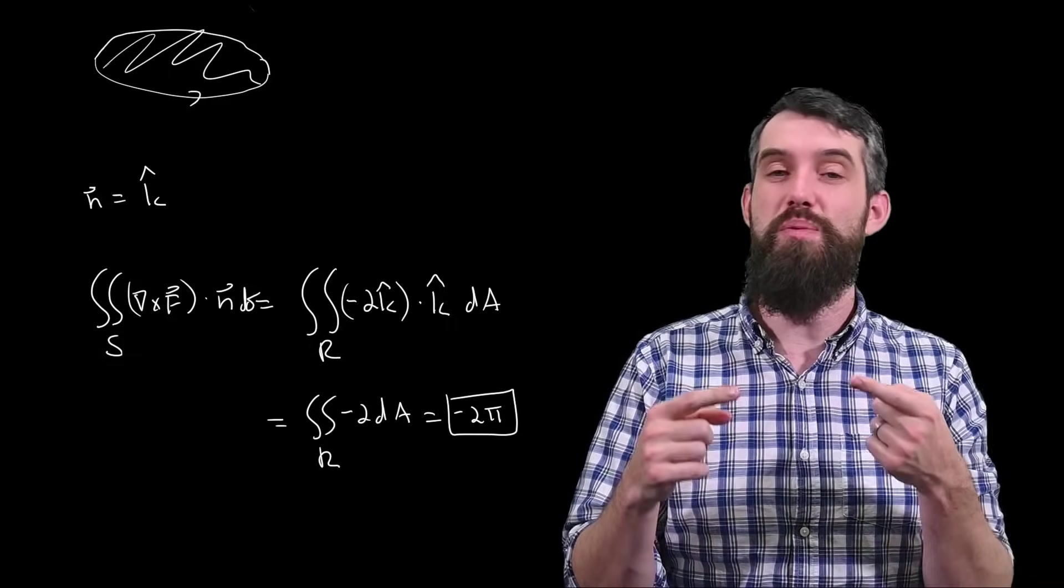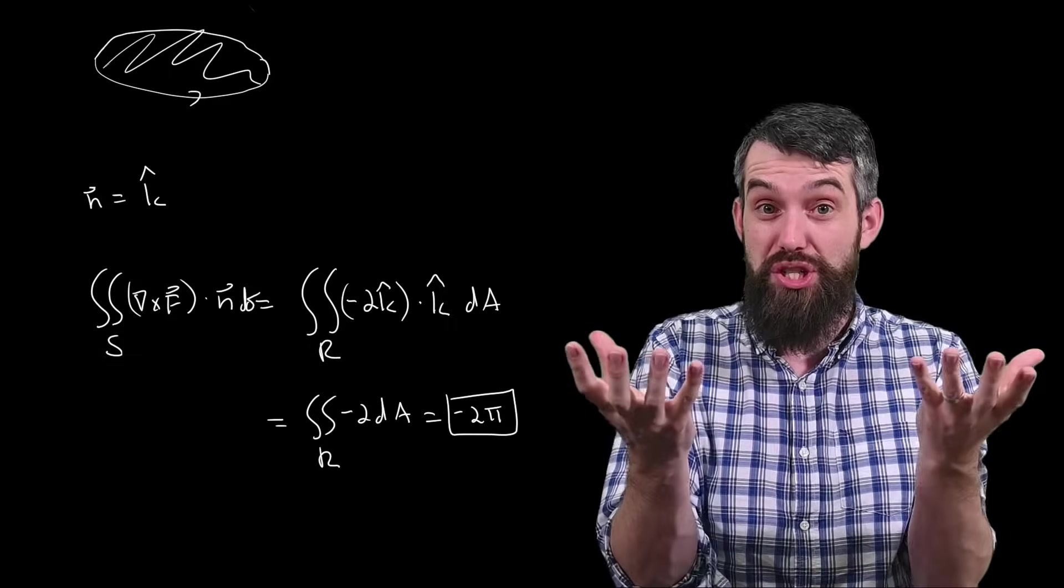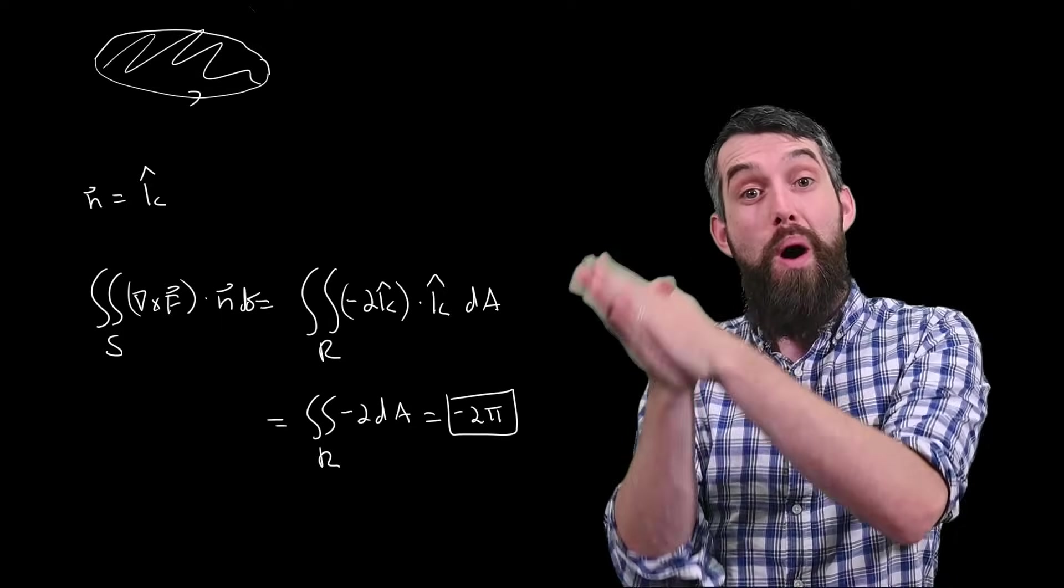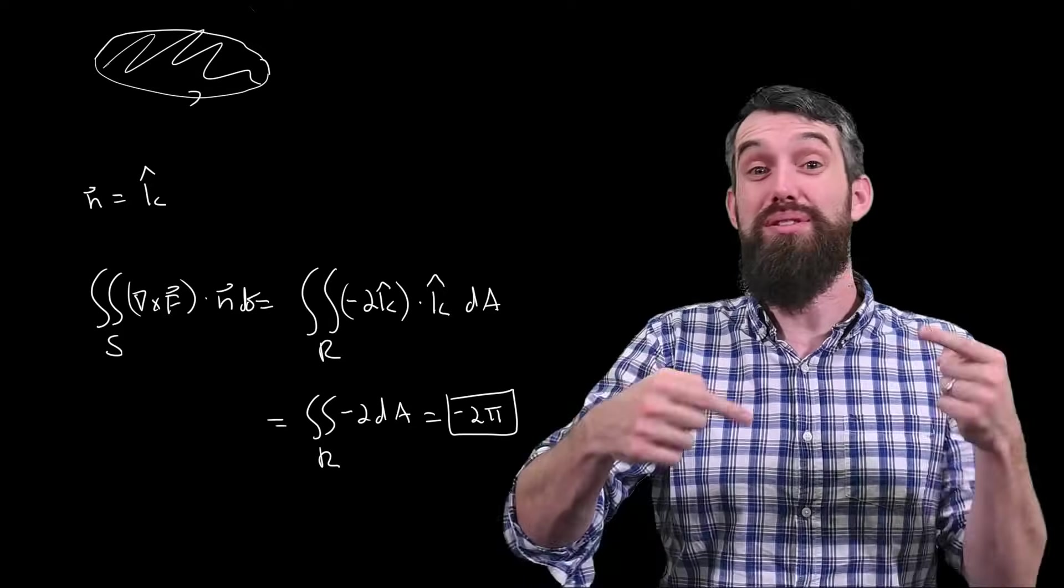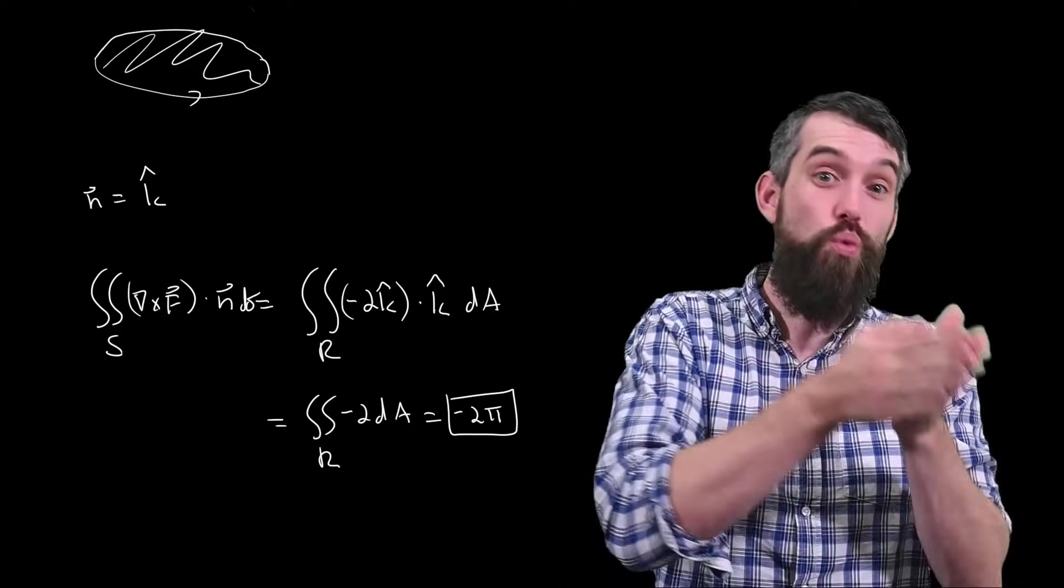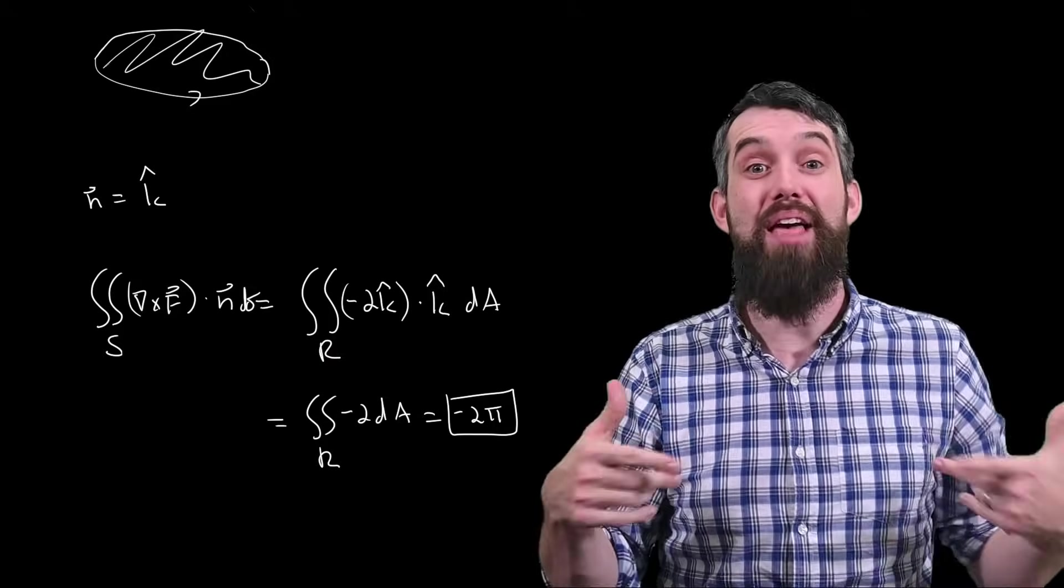So previously, when we thought of Stokes' theorem, we had these two different portions of it. One for the boundary, one for the surface. And basically, depending on what you're interested in, which of those computations was easier, you might do one side or the other to get the opposite side.